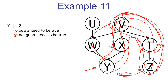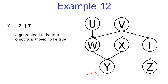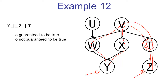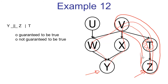We're asked whether y and z are conditionally independent given t. There are two paths connecting y and z. We see that both of these paths have the triple v, t, z in common. This triple, v, t, z, is a causal chain with the middle node observed, so the triple is inactive. Both paths have this inactive triple, which means both paths are inactive. These are the only paths connecting y and z, so all paths are inactive. We can guarantee the conditional independence of y and z given t.